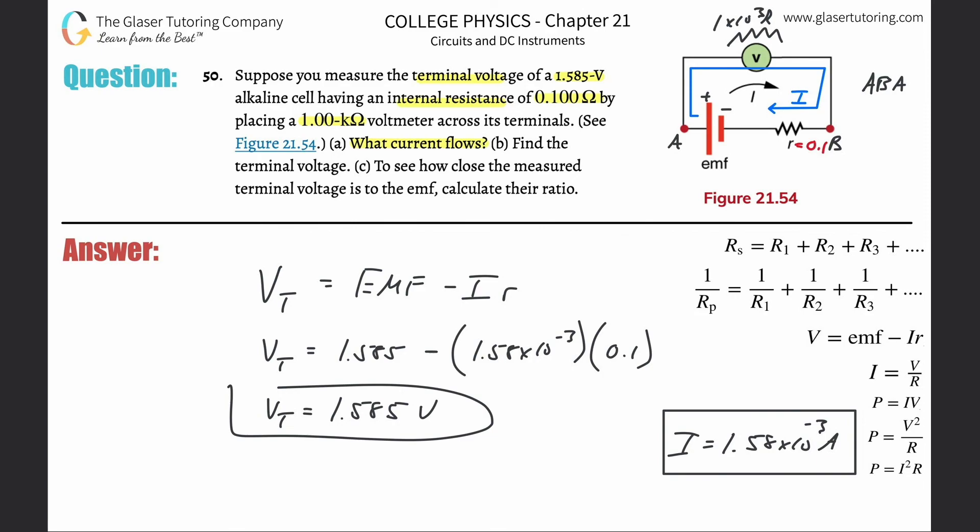Letter C asks how close to the measured terminal voltage is this. That was the terminal voltage for letter B, by the way. What I'm going to do is use the exact value of this number that I just calculated—1.58484151—and divide it by 1.585 to find the ratio. So divide that by 1.585 and it's 0.9999. That's how close—0.9999. Basically, the terminal voltage is identical, for all intents and purposes, to the battery's emf.